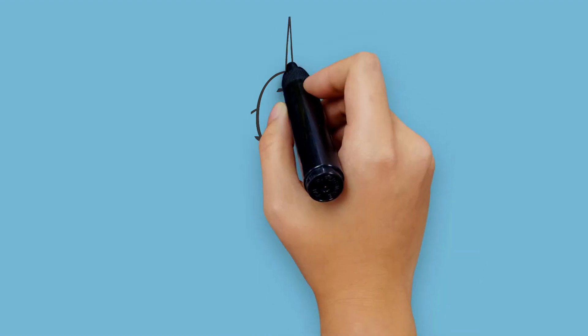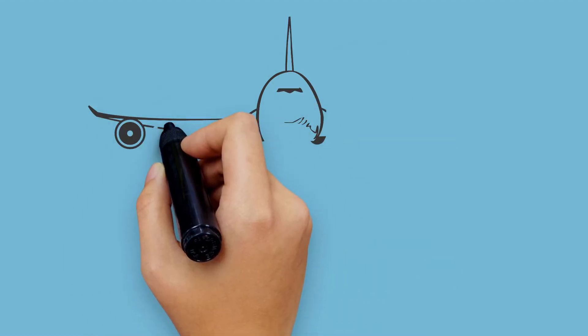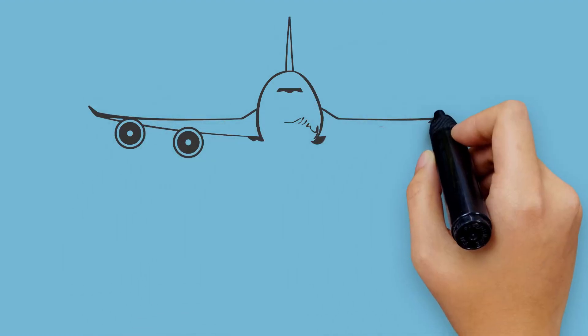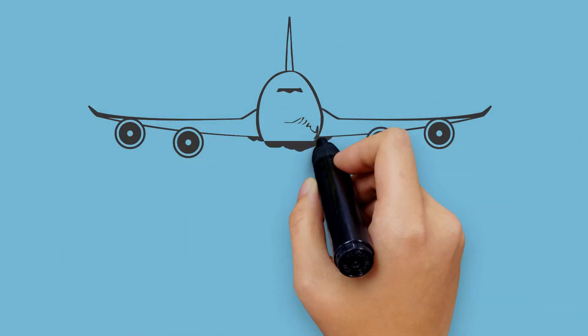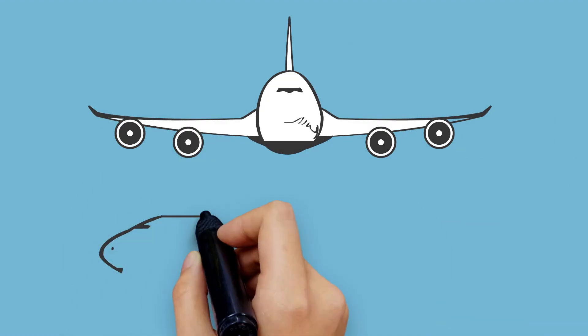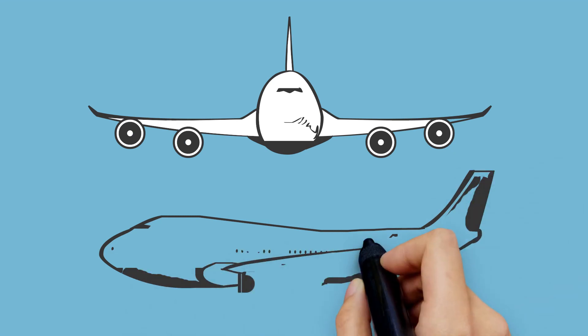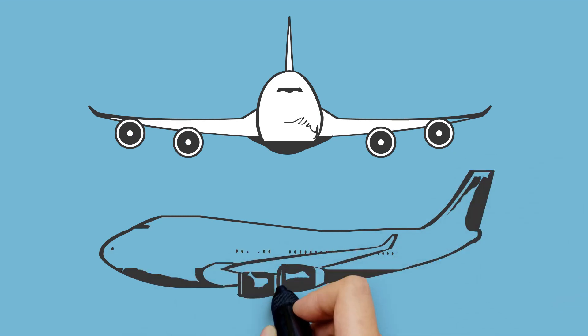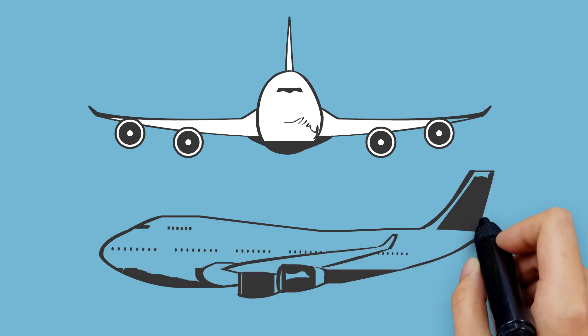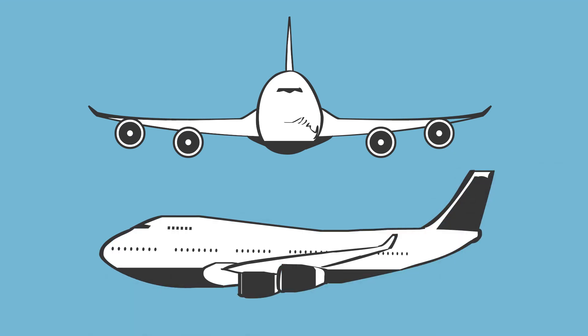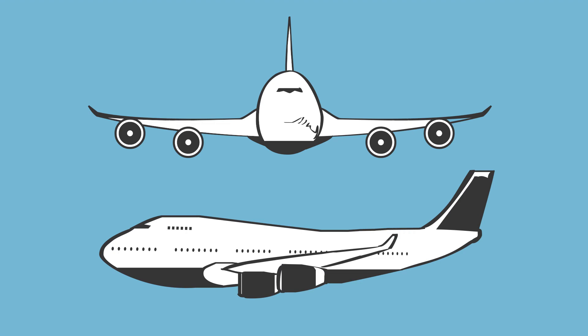The shape of a plane is very important. It has two big wings that usually curve up at the end. The plane also has a tail that keeps it stable when it's flying, and engines that push the plane through the air.